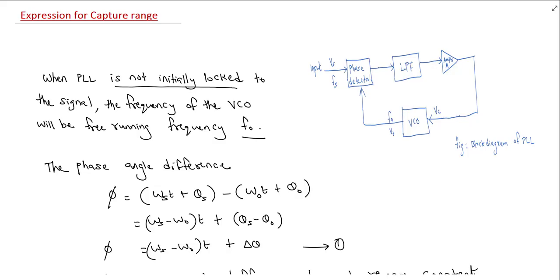We have already learned the Capture Range. When the PLL is not initially locked into the signal, the frequency of the VCO will be equal to that of the free-running frequency. The VCO frequency under no-lock condition is the free-running frequency.